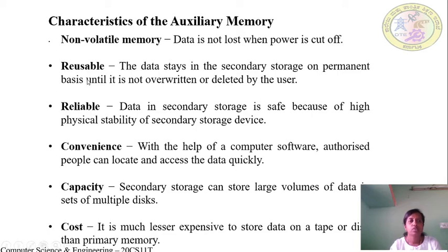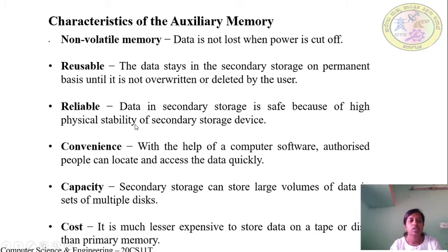The next property is reusable. The data stays in secondary storage on a permanent basis until it is overwritten or deleted by the user. The data stored in secondary memory is permanent until it is overwritten or deleted. Next, reliable: data in secondary storage is safe because of the high physical stability of secondary storage devices. They have strong resistance — until physical damage occurs, the data will not be erased.